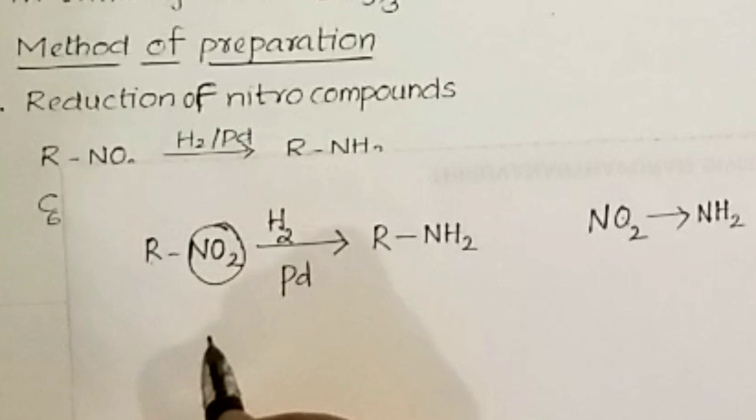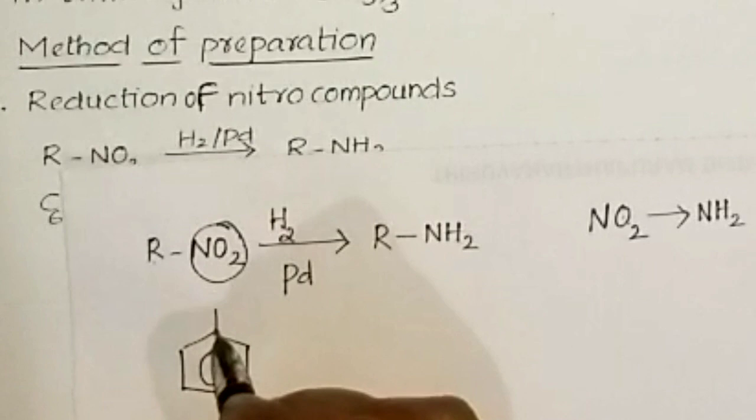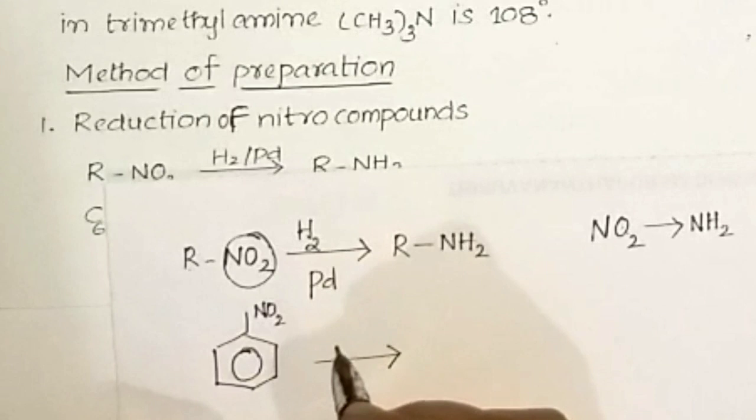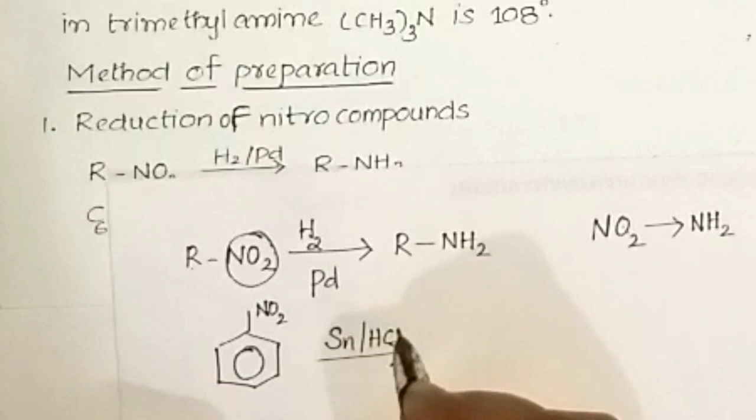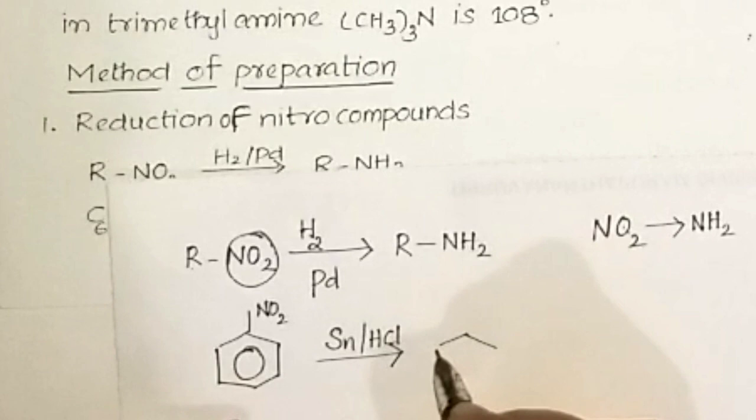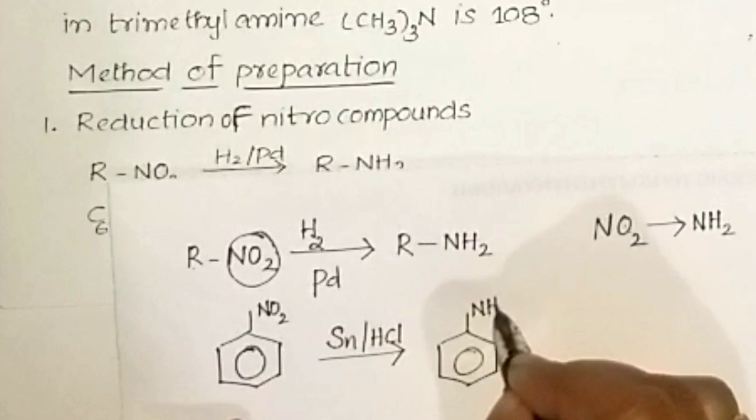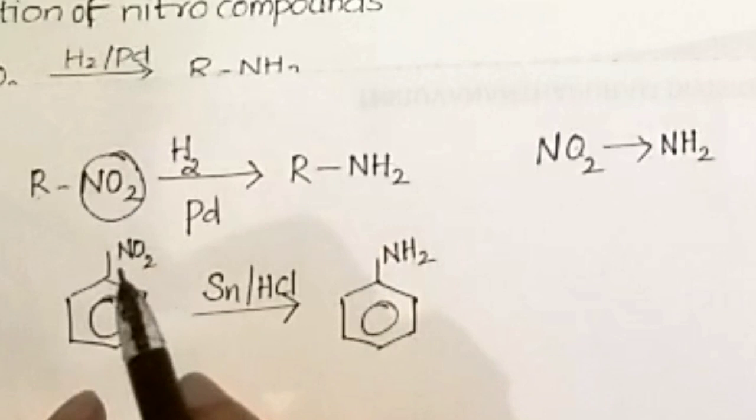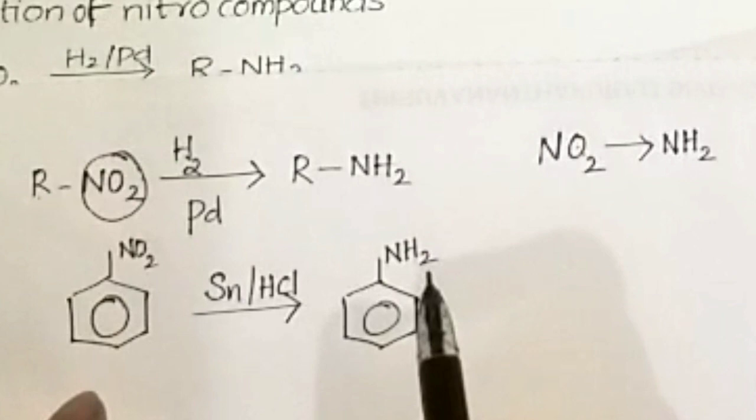Another example: nitrobenzene — benzene ring with the NO2 group. On reduction using tin and HCl as reducing agents, the NO2 group changes to NH2 group. Oxygen is removed and hydrogen is added. Any compound containing a nitro group on reduction gives the corresponding amine.